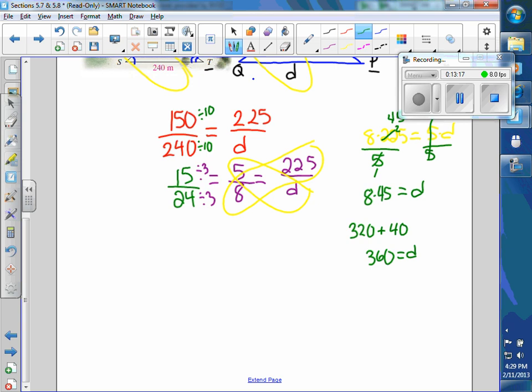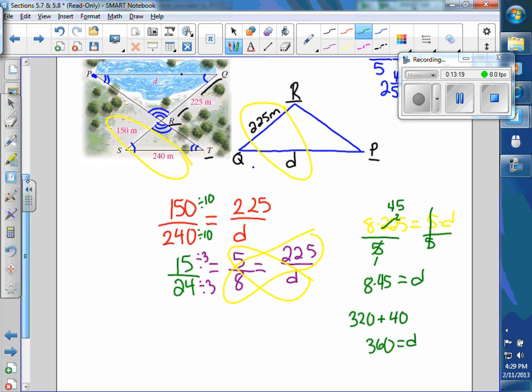So look back at the picture. Let's see if that makes some sense. This would be meters. So this is the biggest value compared to the 150 in the small triangle. So the D should be bigger than the 225 in the big triangle. And that's your final answer.